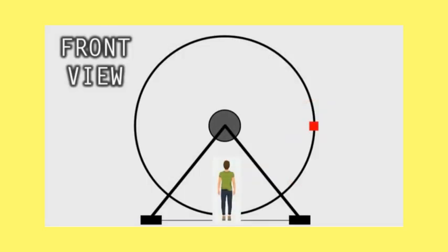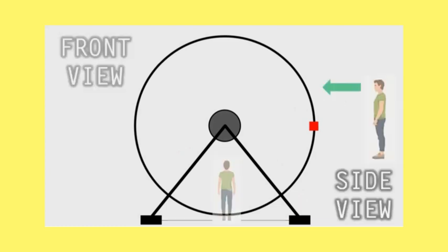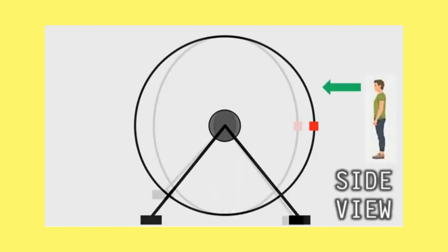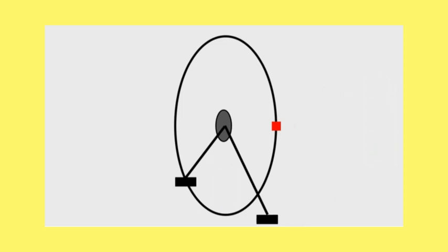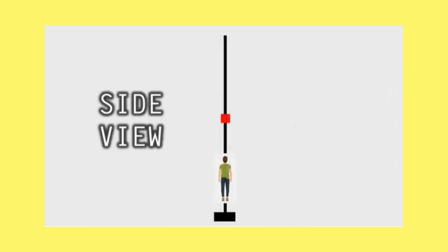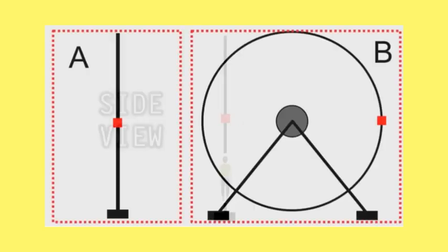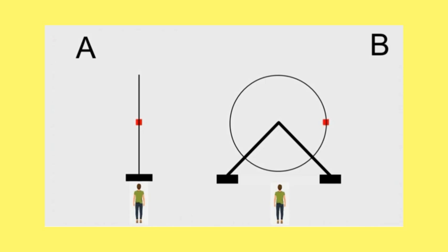But what if, instead of looking at the giant wheel from the front, we look at it from the side? So rotating the giant wheel towards us, until it ends up looking like this. As you look at it from the side, it just looks like a vertical line. Here are the two views, A and B. Now, as the giant wheel rotates, the movement of the red square in view A is just in a straight vertical line, going up and down.